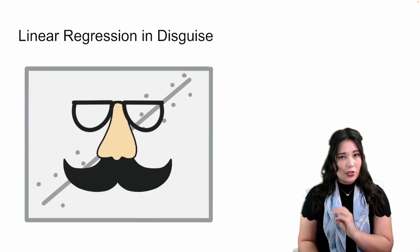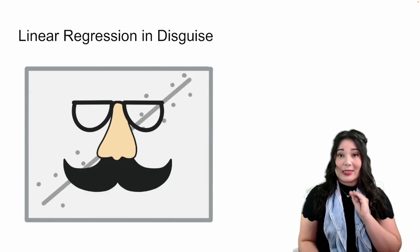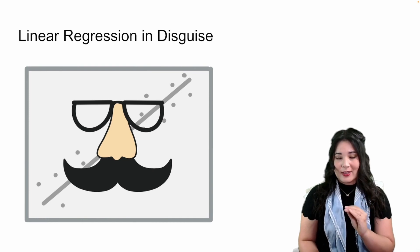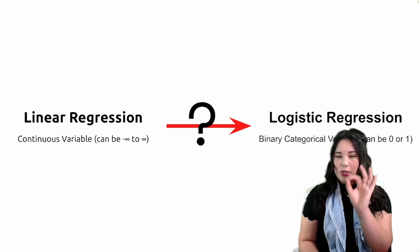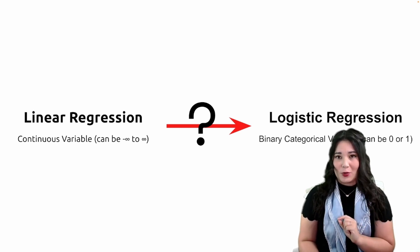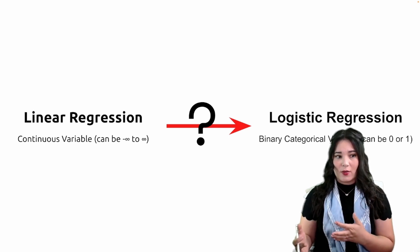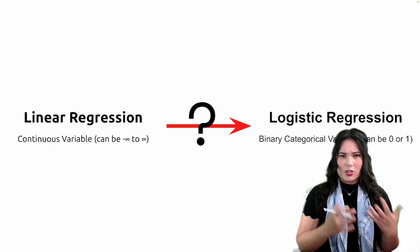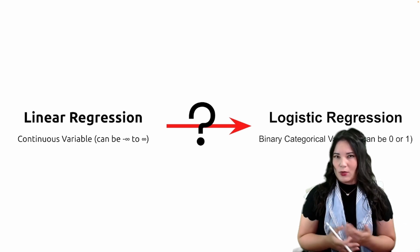I have some good news for you: logistic regression is just linear regression in disguise. Basically, what we're going to do is use linear regression to predict a categorical variable. But how do we do that? Linear regression predicts a continuous value and logistic regression predicts a categorical value.